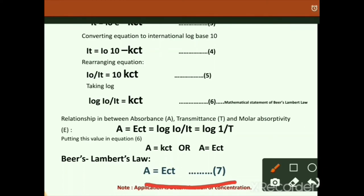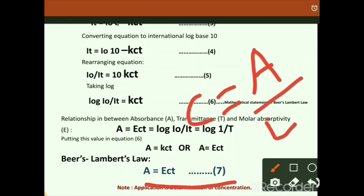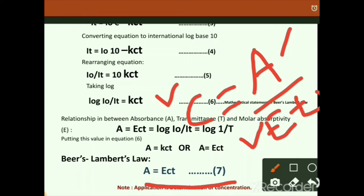The combined Beer-Lambert law equation is A = εCT, where A is absorbance, ε is molar absorptivity, C is concentration, and T is thickness. Rearranging gives C = A/(εT). To determine concentration of an unknown substance: measure absorbance A experimentally, obtain ε from standard reference books, and use T = 1 cm as the standard path length.